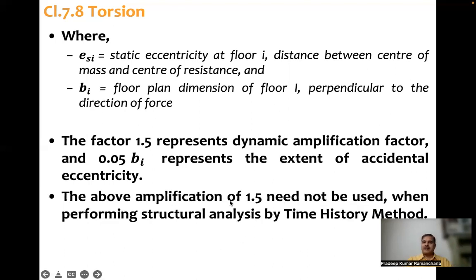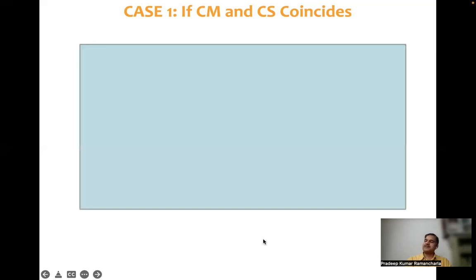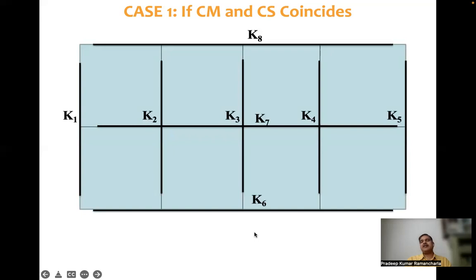This 1.5 factor need not be used when performing dynamic analysis using time history. Now there are two cases. Case one: if center of mass and center of stiffness or center of resistance coincide — this is the ideal case. Consider a diaphragm with five frames along the y direction with stiffnesses k1 to k5, and three frames along the x direction: k6, k7, and k8. In this case, center of mass and center of resistance lie at the same location.